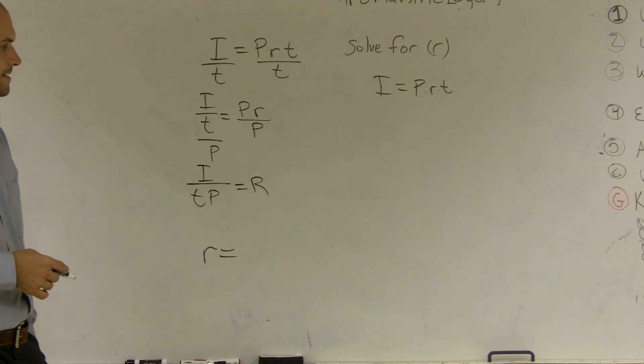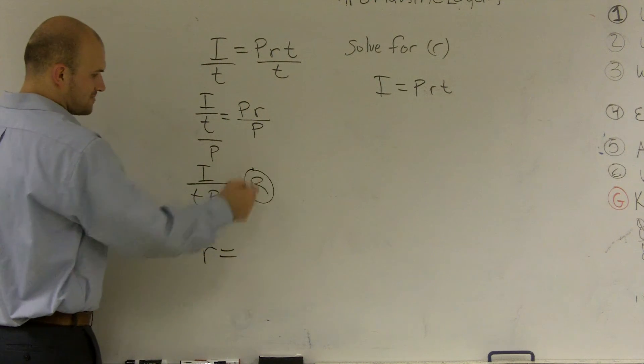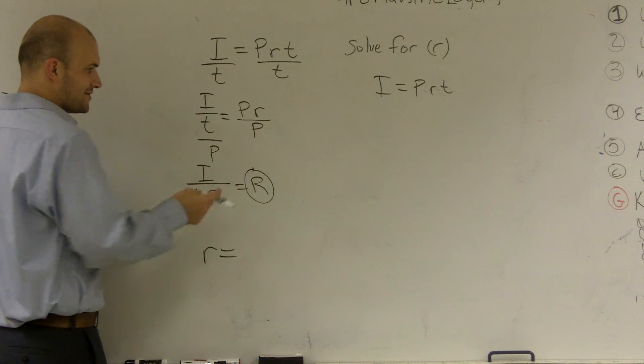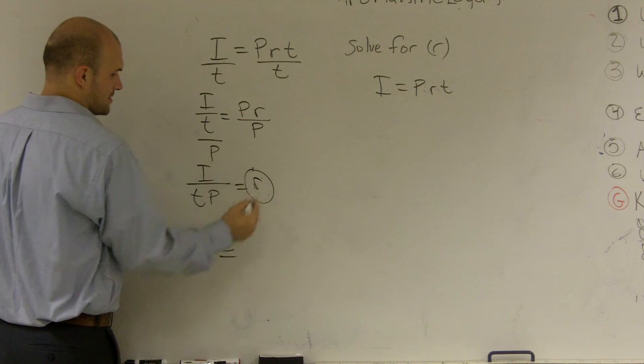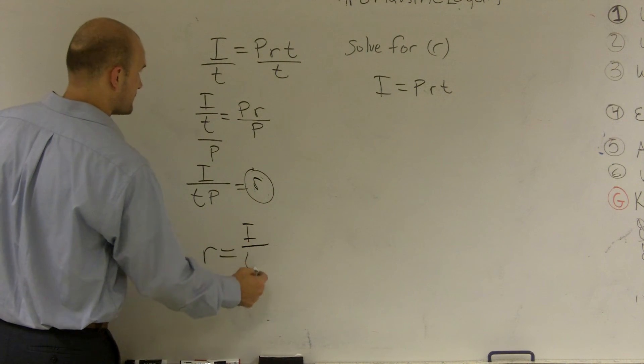All right? Well, so therefore, you can say that r is by itself. I've made a capitalized r to a lowercase r. I don't know why. So r equals i over tp.